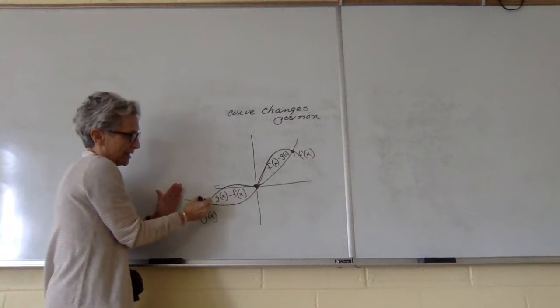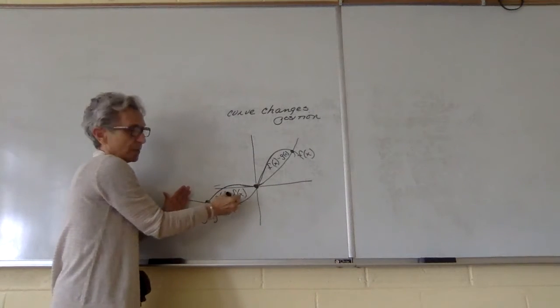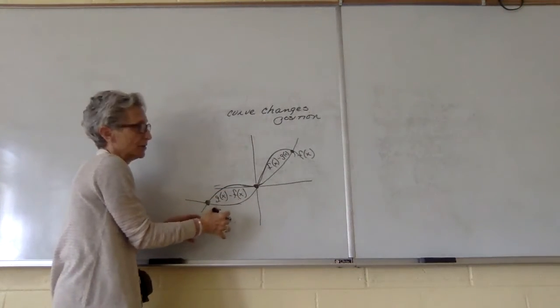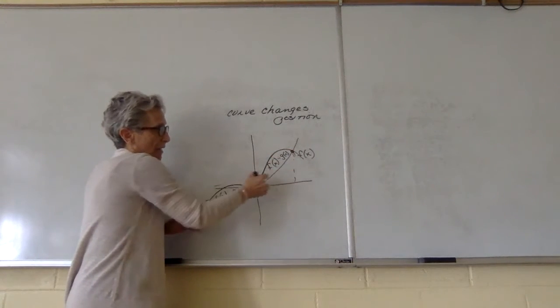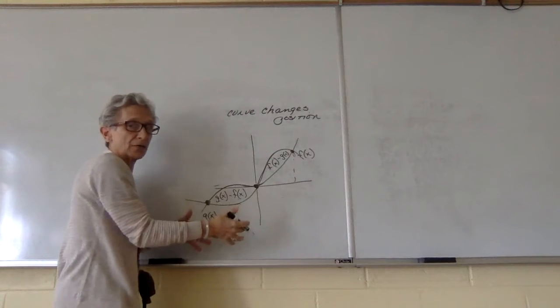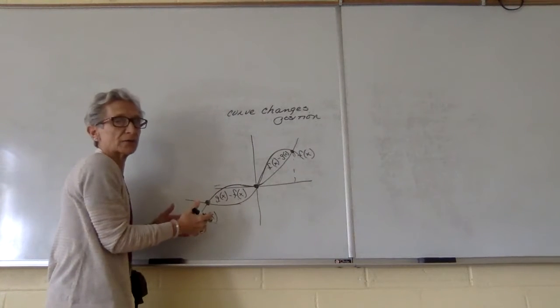You're going to take the integral going from here to here, top curve minus bottom curve, get an answer. Take the integral going from here to here, top curve minus bottom curve, get another answer, and then add the two of them together.